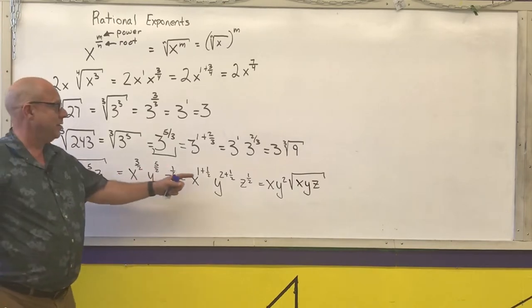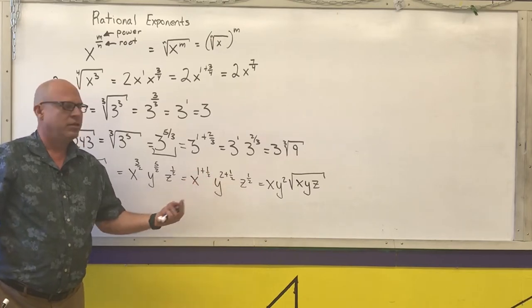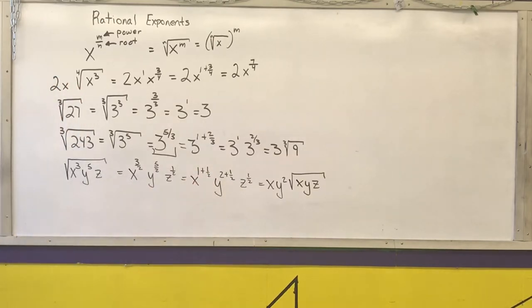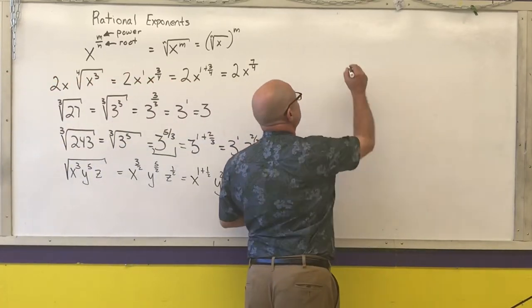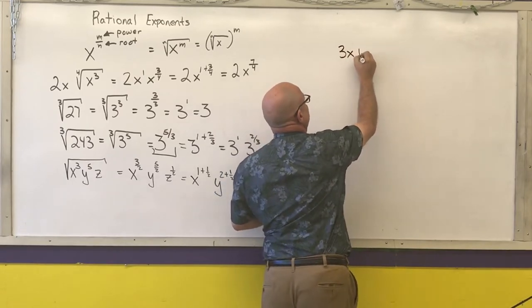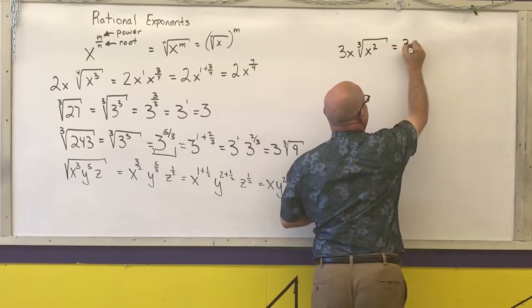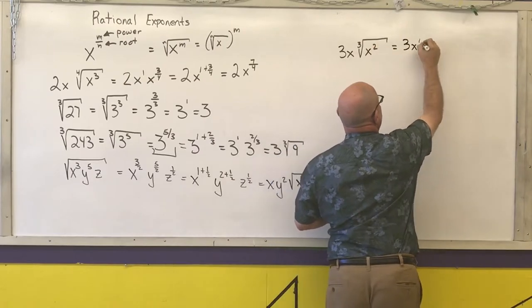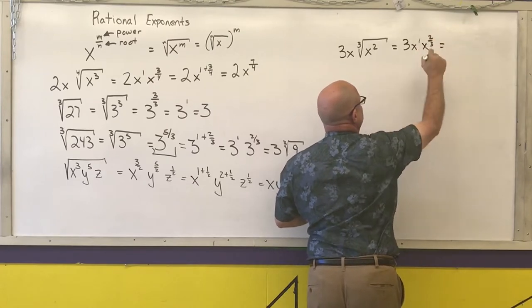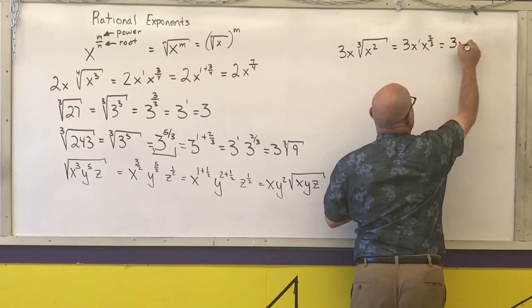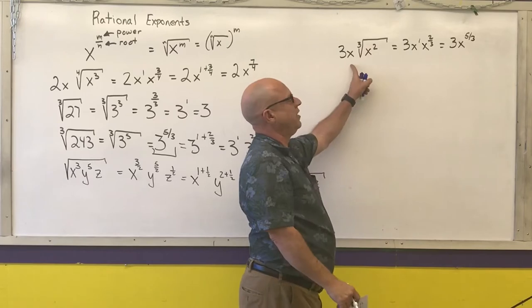Again, this is where I find out whether or not you can utilize fractions and the properties of exponents to help simplify some of these more complex radicals. Next example: 3x times the cube root of x squared. That's 3x to the first, that's x to the two-thirds. One plus two-thirds is three-thirds plus two-thirds, which is five-thirds. That would be the exponential form. If I were to ask you to put it in radical form, I'd get right back where I started from.